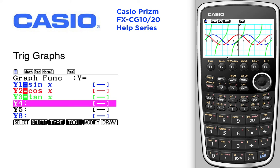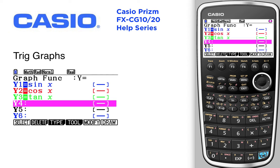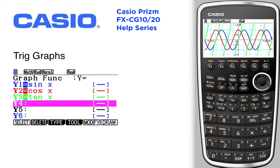The window is not a perfect window — I'd like to see a better window. So let's use a trig window: shift, view window. Currently we're in the initial; let's go to trig. Since we are in radian mode, this will be negative 3 pi to positive 3 pi in terms of some factor of pi, and from negative 1.6 to 1.6. We'll go ahead and press execute, and execute again. We get a better window.